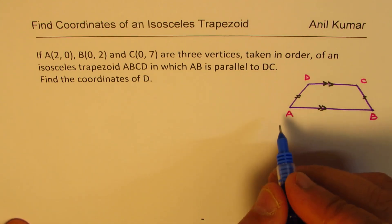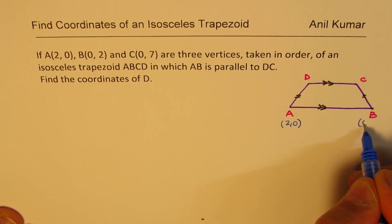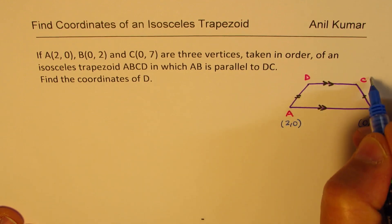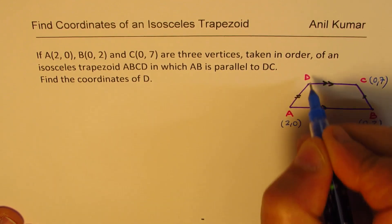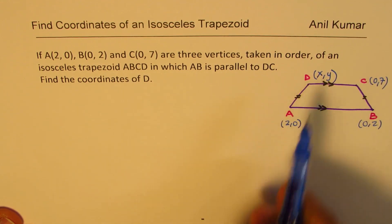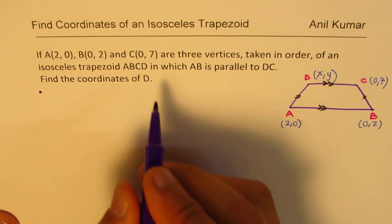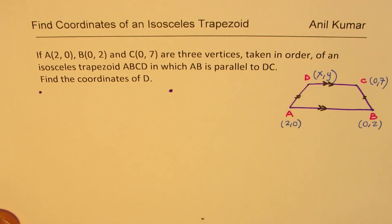Let's write down the coordinates given to us. We have A(2,0) here, B is (0,2), C is (0,7) and let's write (X,Y) for D. Now XY basically means we need to find two values. Since there are two values, we should have two equations. So I hope you understand the strategy.